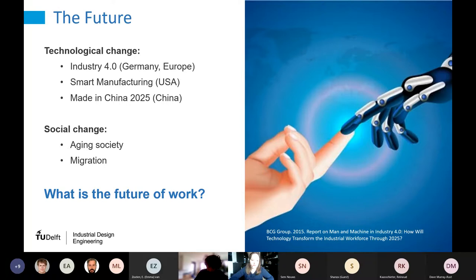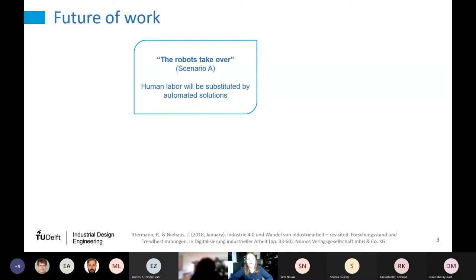This question is getting much more interest right now — for example at the World Economic Forum and a very cool conference from Stanford on AI and the future of work. I see this research within that context, of course not solving all of these questions. There are basically four different types of future scenarios described in literature, summarized in a German paper on the future of work in the production industry.